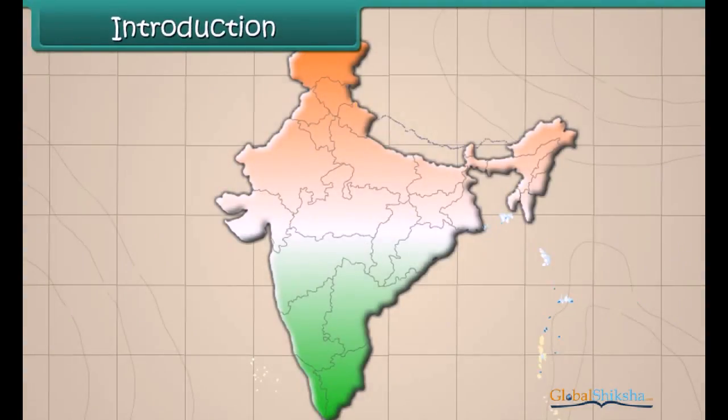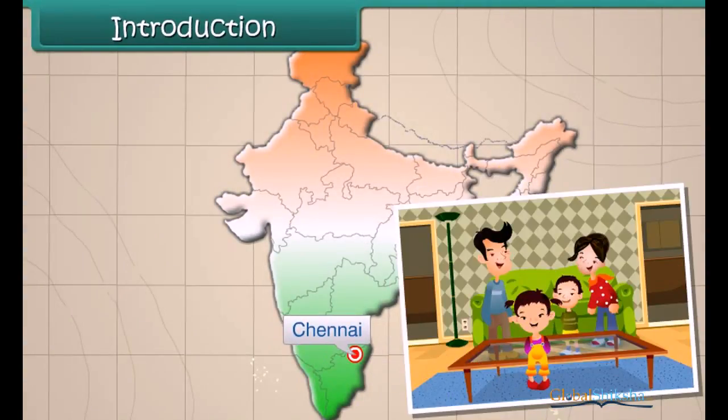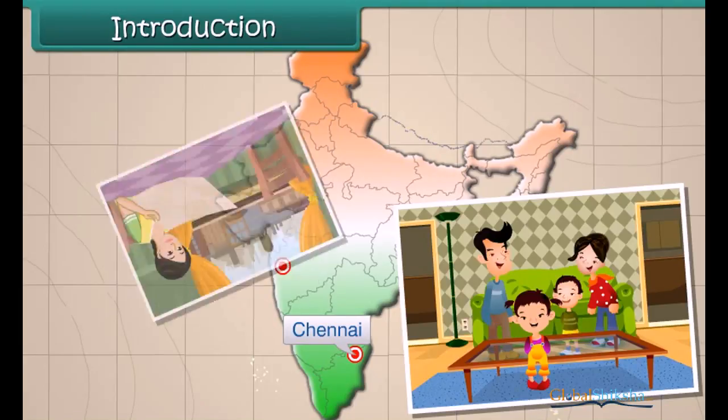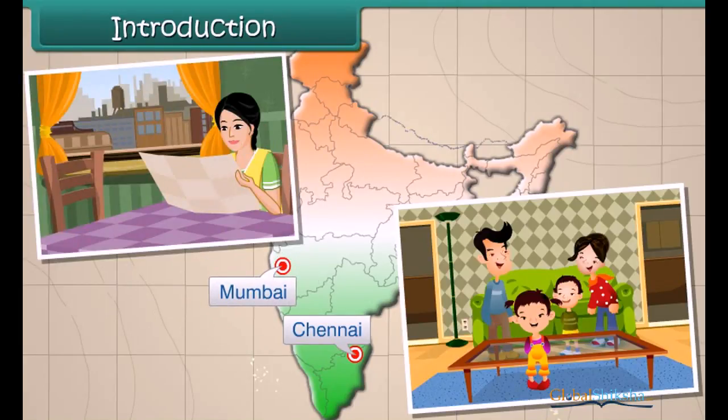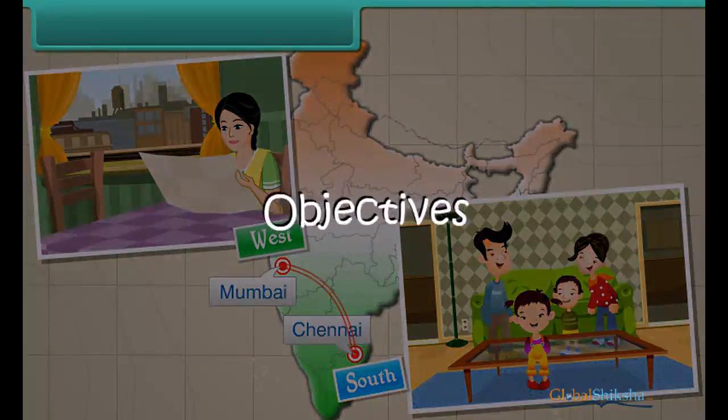Introduction. Aditi lives with her parents in Chennai. Her aunt lives in Mumbai. She visits her aunt every year in April. So, she travels from south to west.